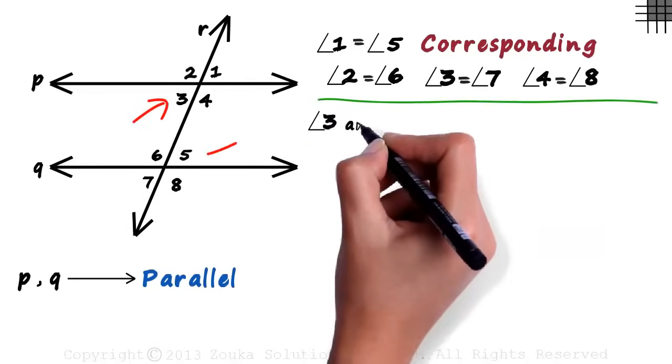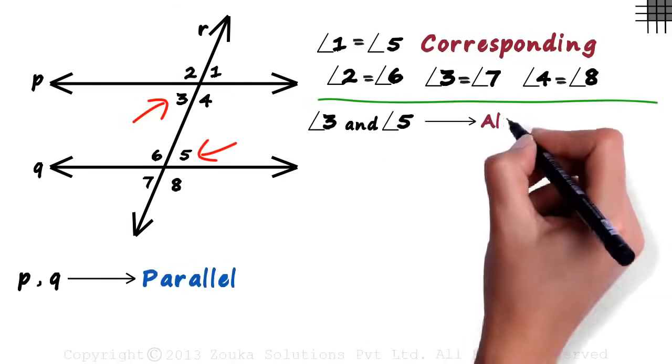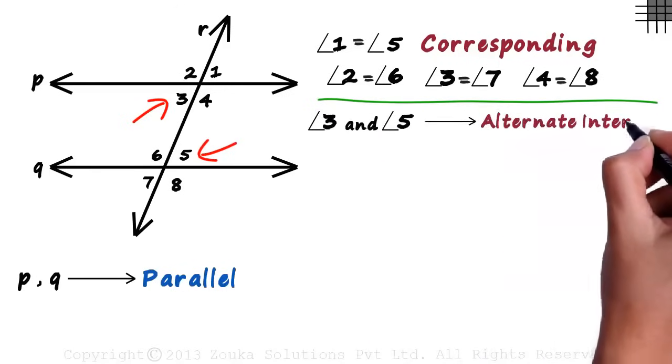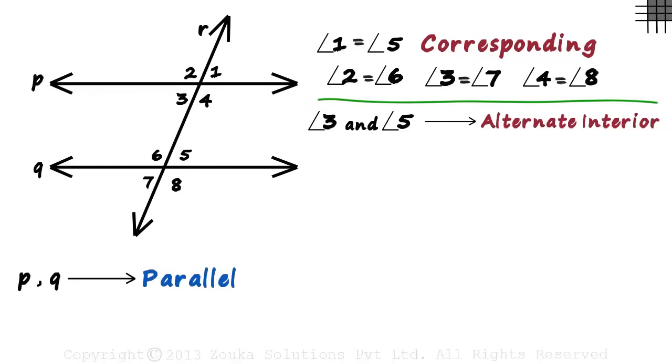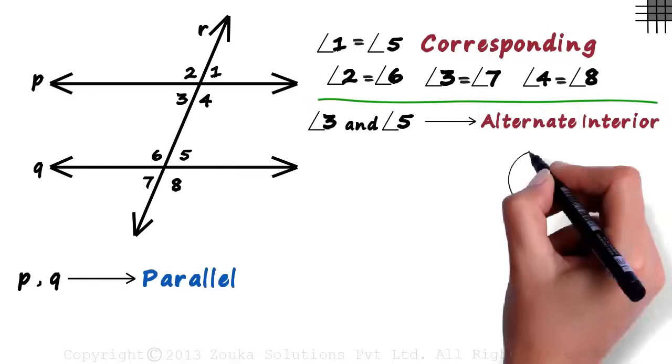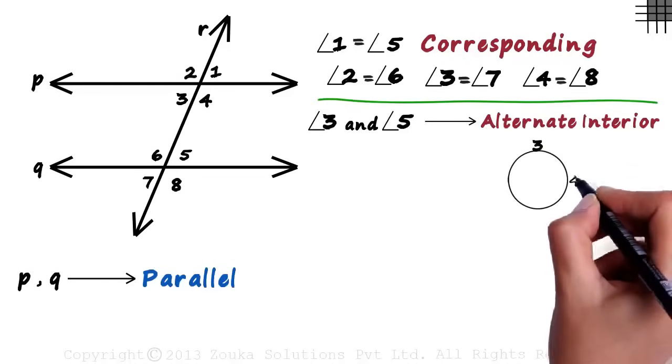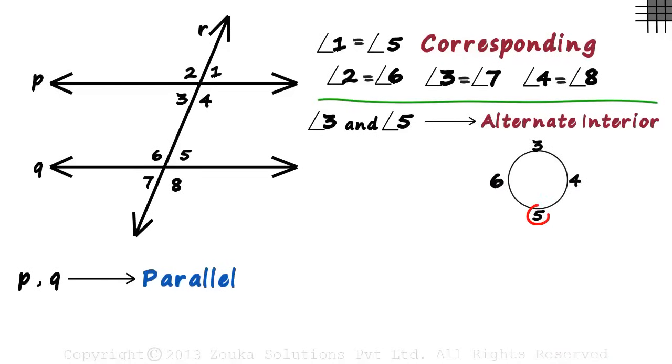Angle three and angle five form a pair of alternate interior angles. We know why they are called interior, but why exactly are they called alternate? If we have a round table with numbers three, four, five, and six around it, then five is alternate to three. That's because after three, you skip one position and take the next.